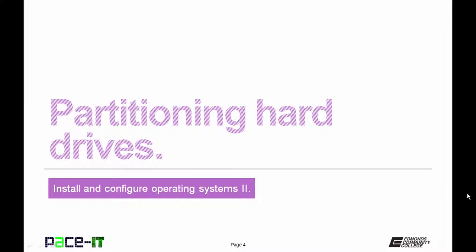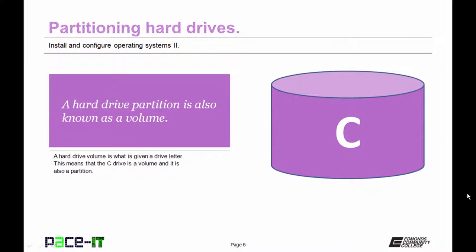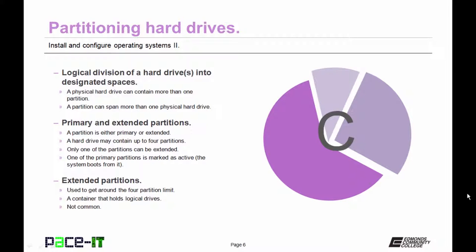We begin by talking about partitioning hard drives. A hard drive partition is also known as a volume. A hard drive volume is what is given the drive letter — so the C drive, the main drive, is a volume and it is a partition. Partitioning involves the logical division of a hard drive or drives into designated spaces. A physical hard drive can contain more than one partition, and a partition can span more than one physical hard drive. A hard drive partition is either primary or extended, and a hard drive can contain up to four partitions.